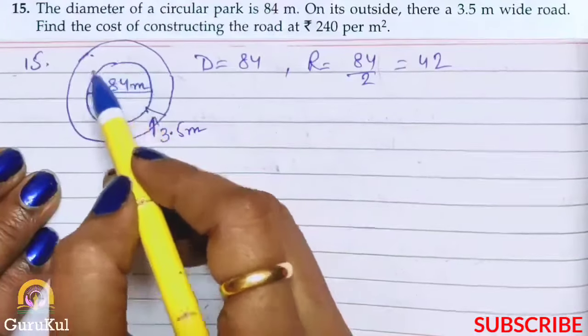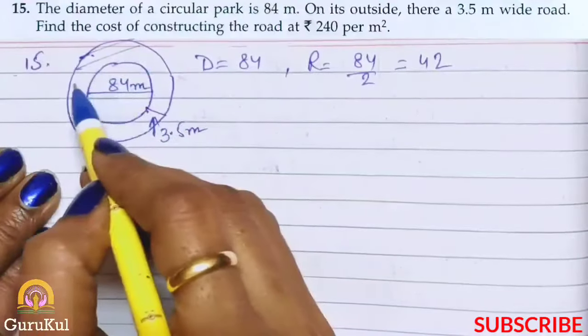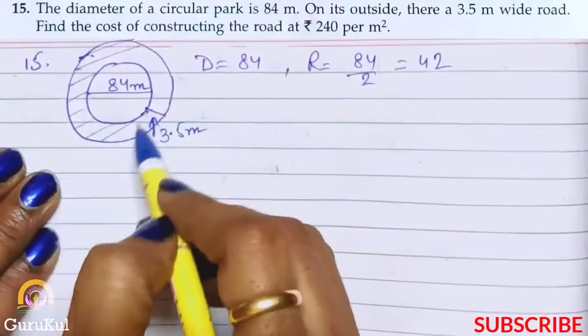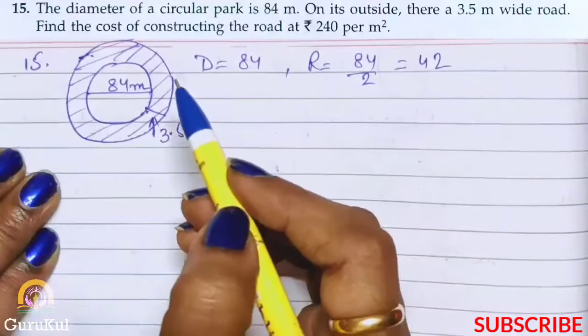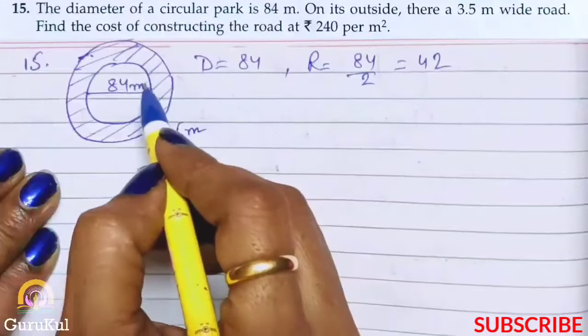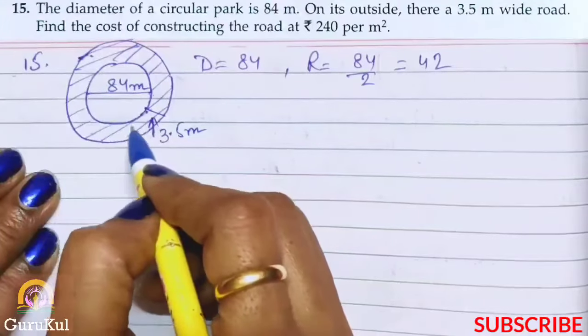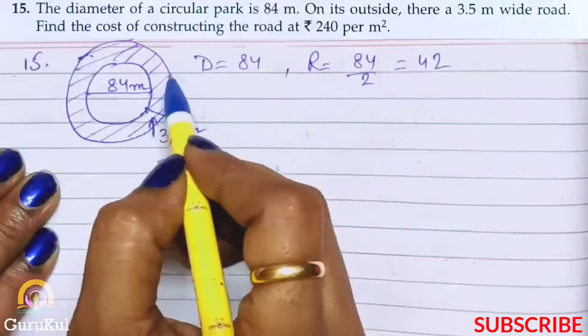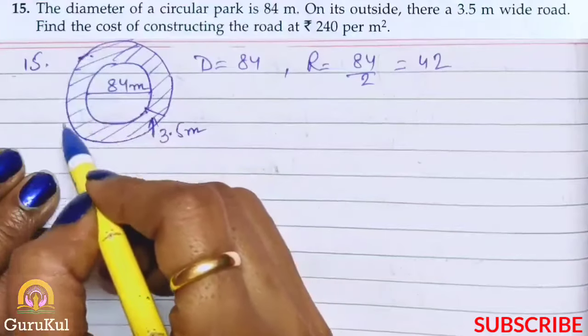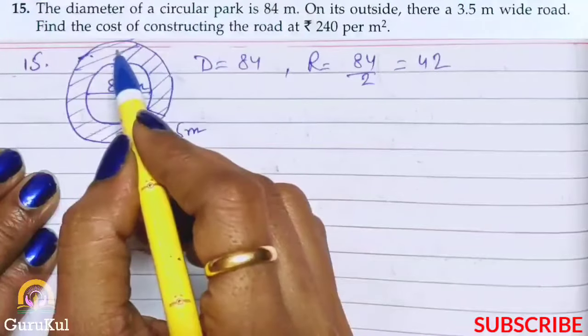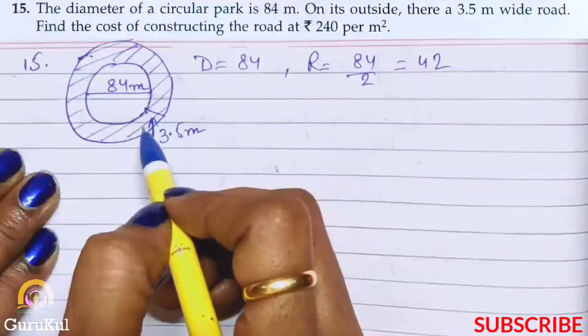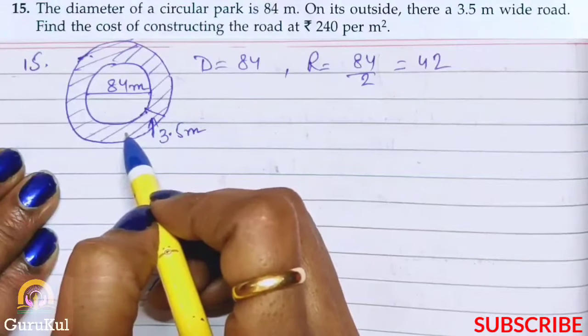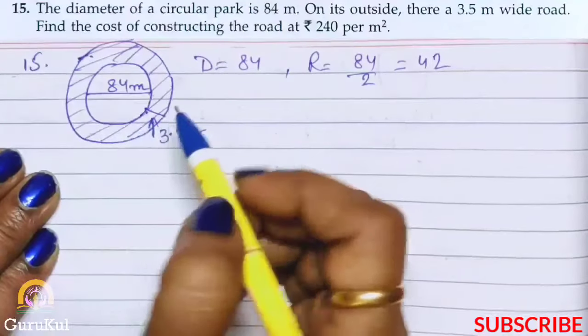So we have to find the area of this. So we will find it like this: first we have to find the area of the actual park, then we have to find the area of the outer circle, then subtract both, so we will get the area of the shaded portion or the road.